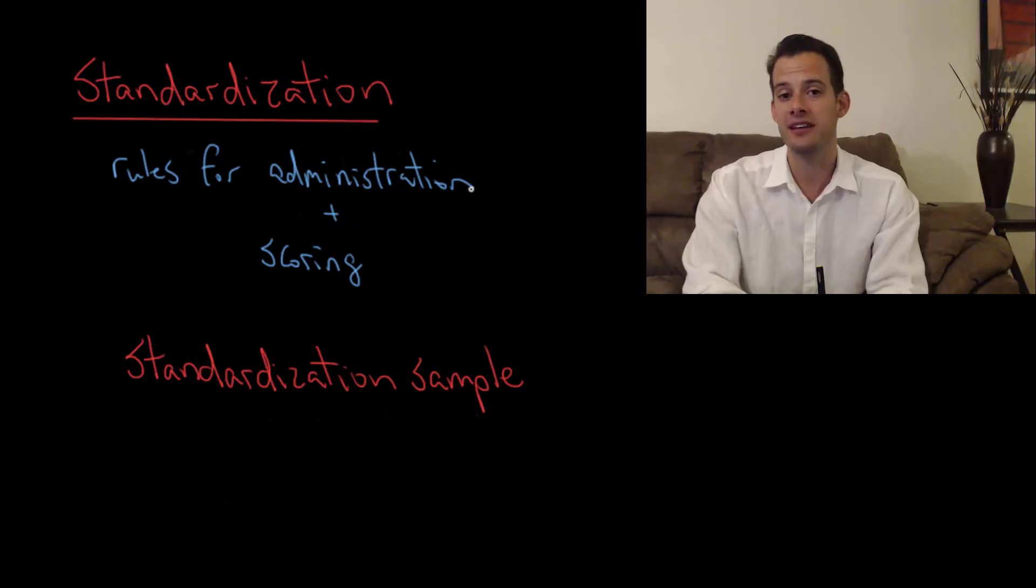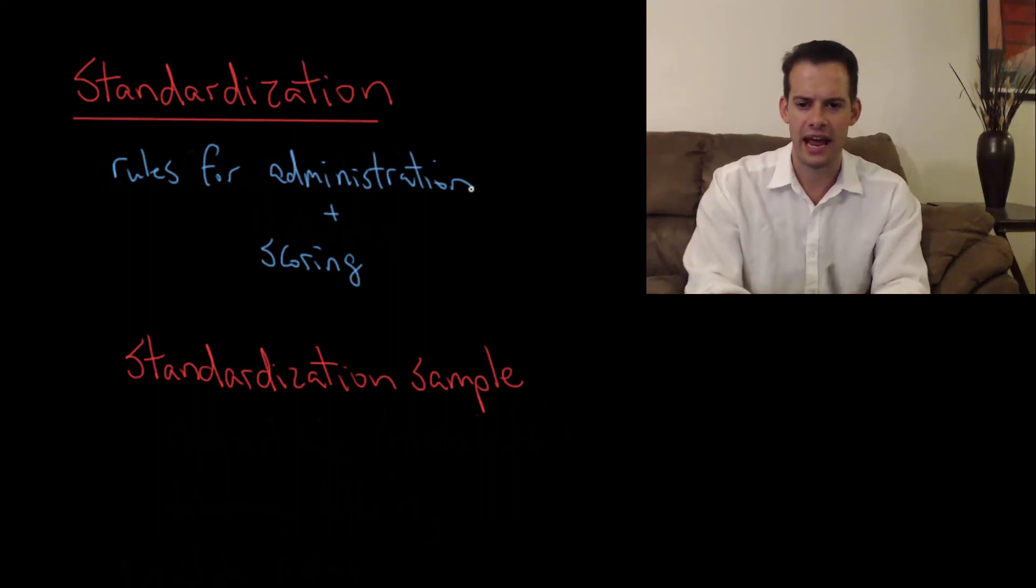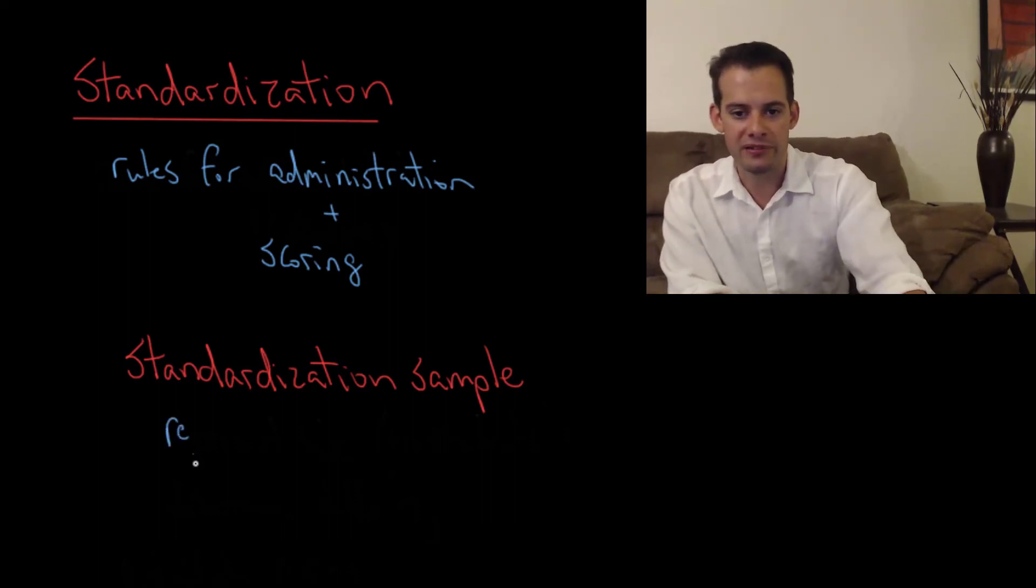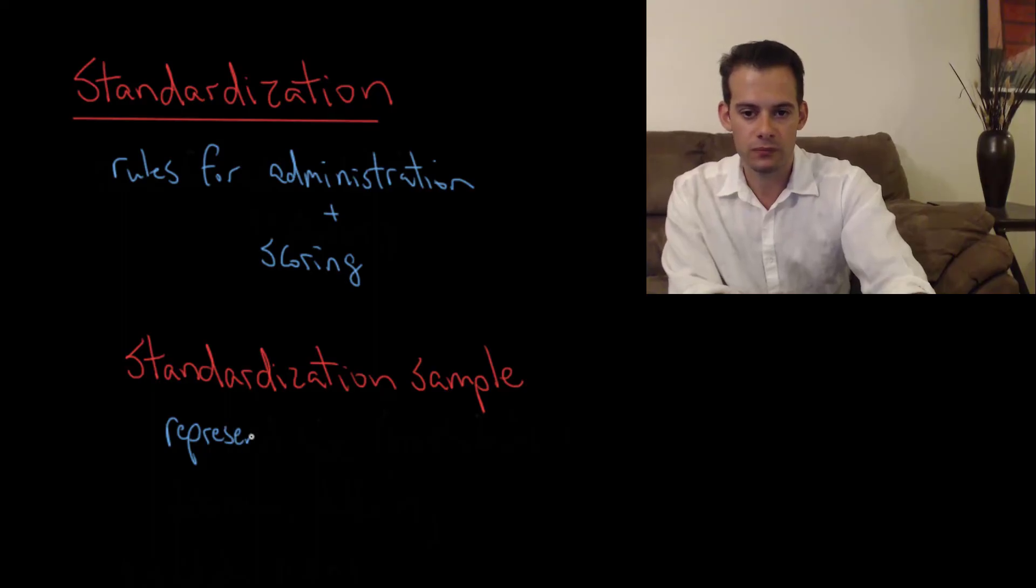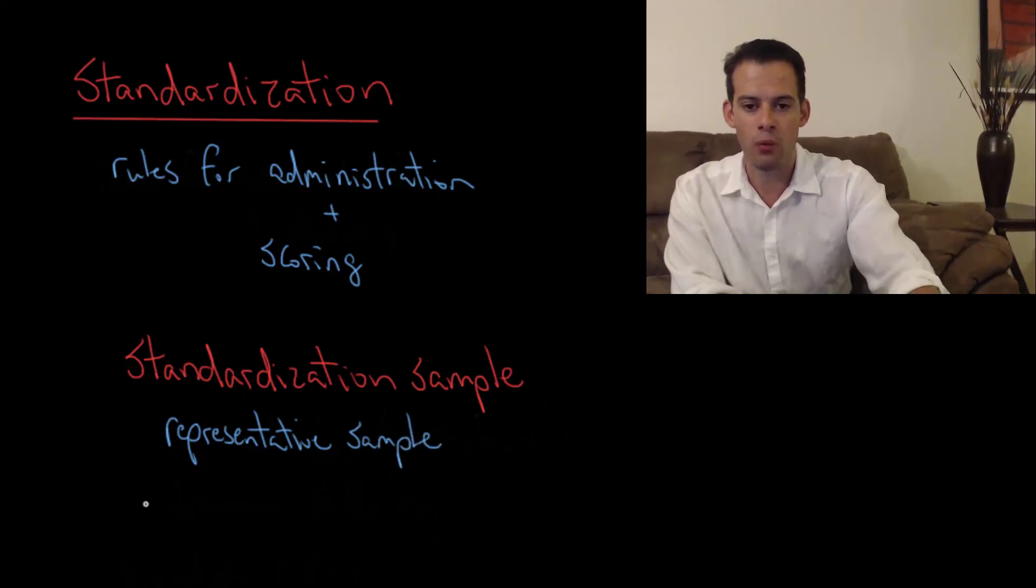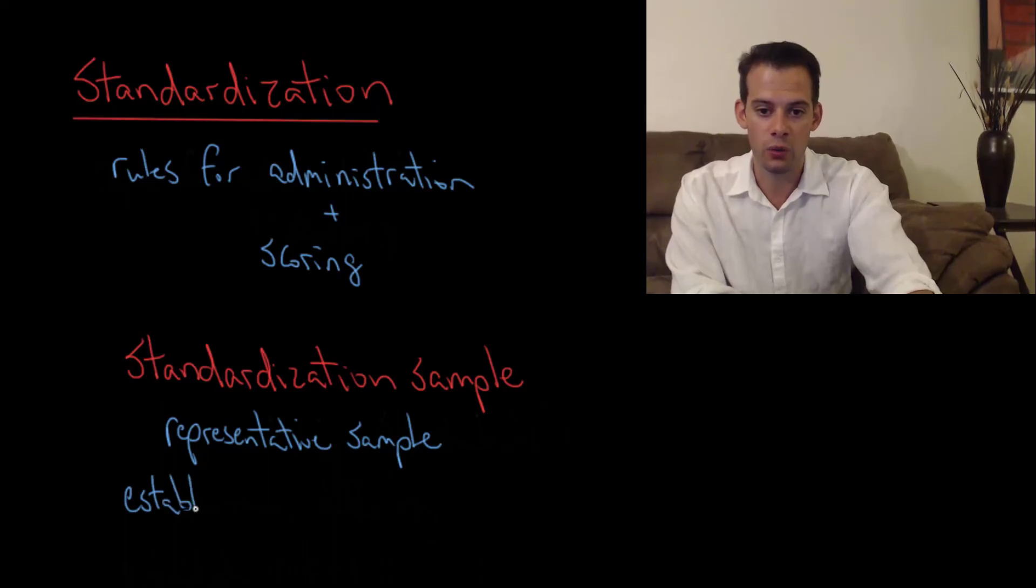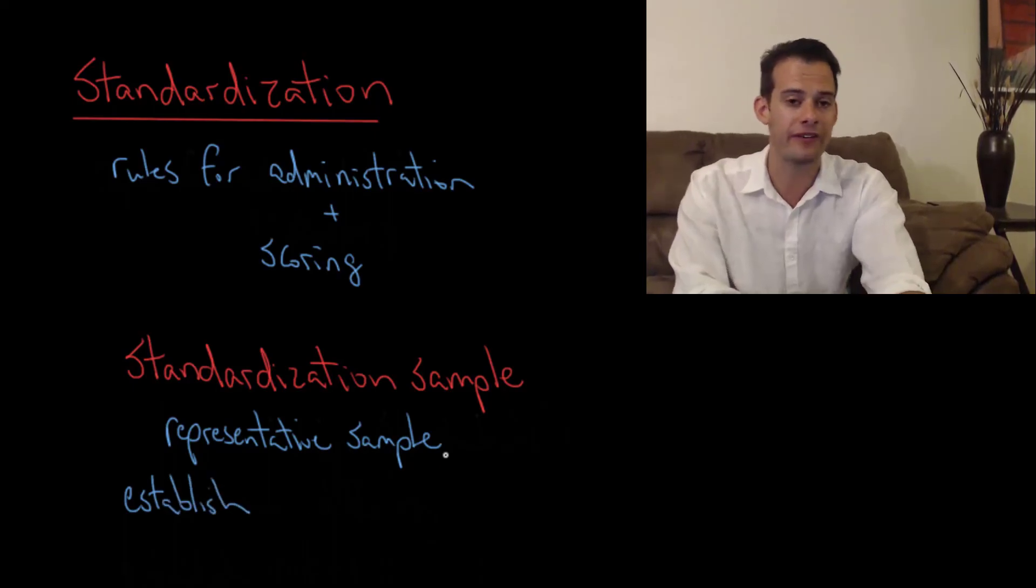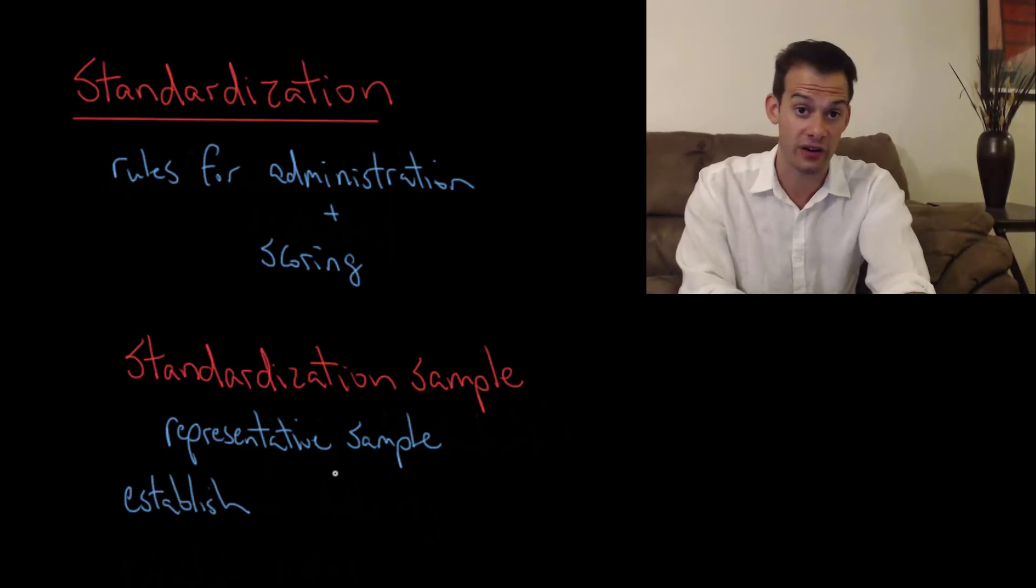That is we want to test the questions out with a group of people, a sample, that allows us to standardize the test. And that means we want to have a representative sample. We want to have people who represent the people who are actually going to be taking this test. And what we want to do is establish norms. That means we want to figure out how difficult should this particular section of the test be. What percentage of students do we expect to be able to answer this question correctly?